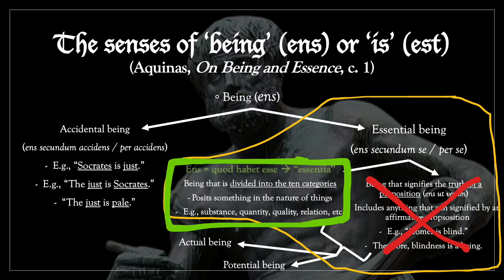This being, Aquinas says, is etymologically related to the word 'essentia' or essence. That's because 'ens' or being signifies that which has 'esse' or that which has existence — 'quod habet esse'. And 'essentia' is obviously etymologically related to 'esse'.